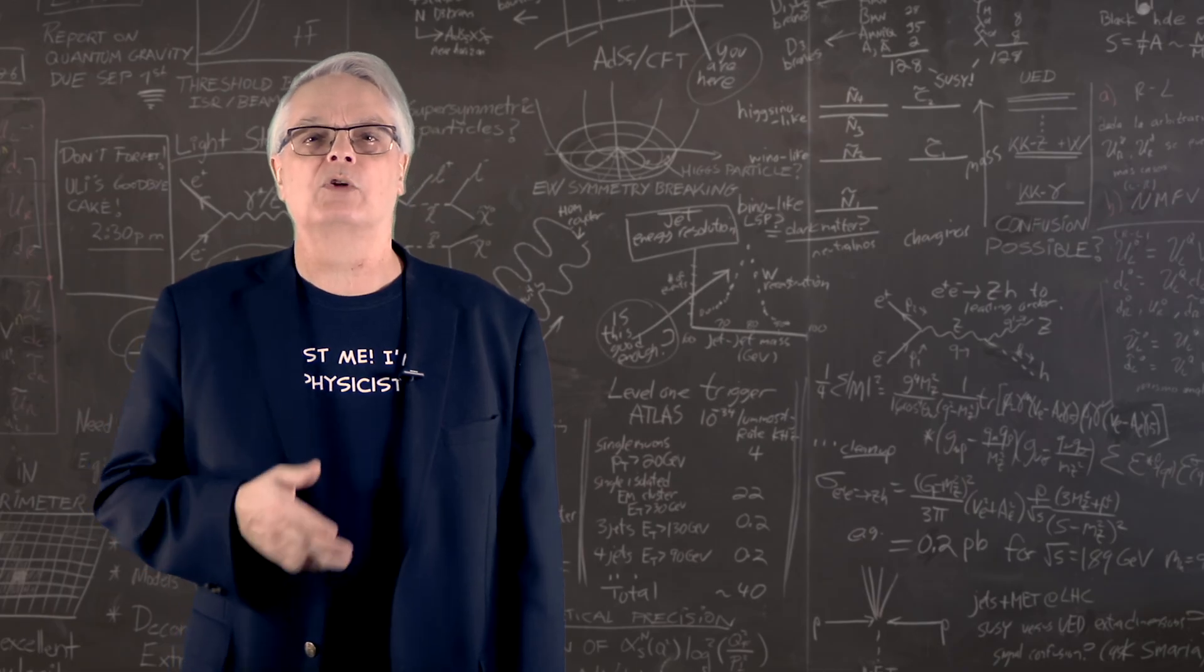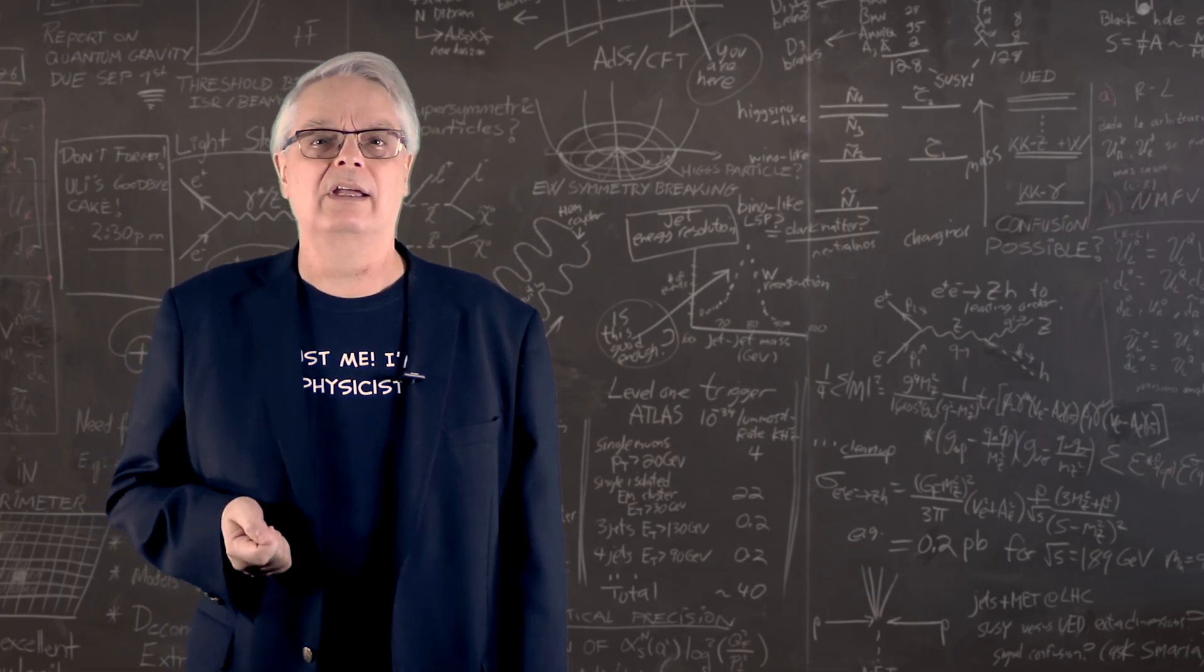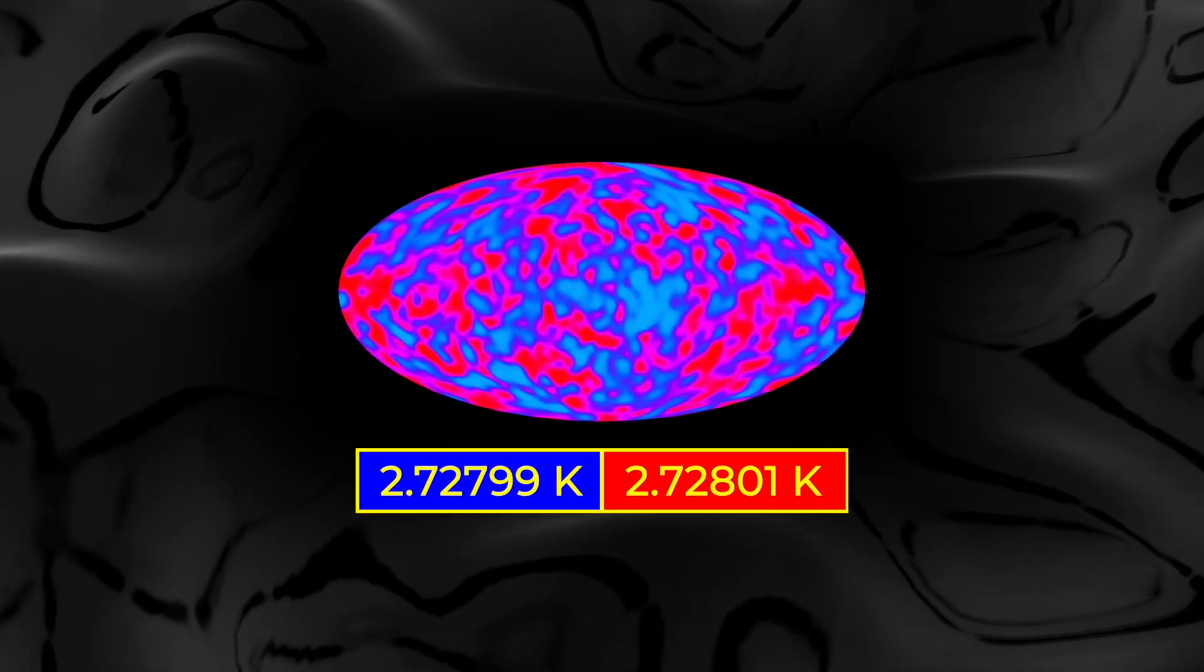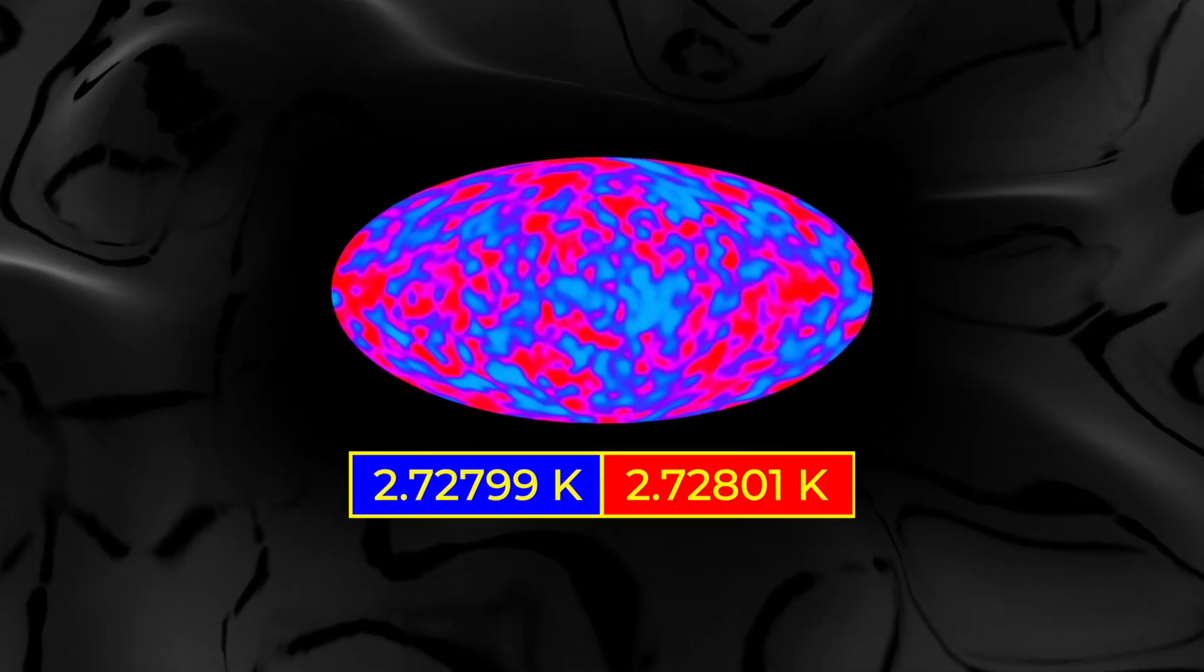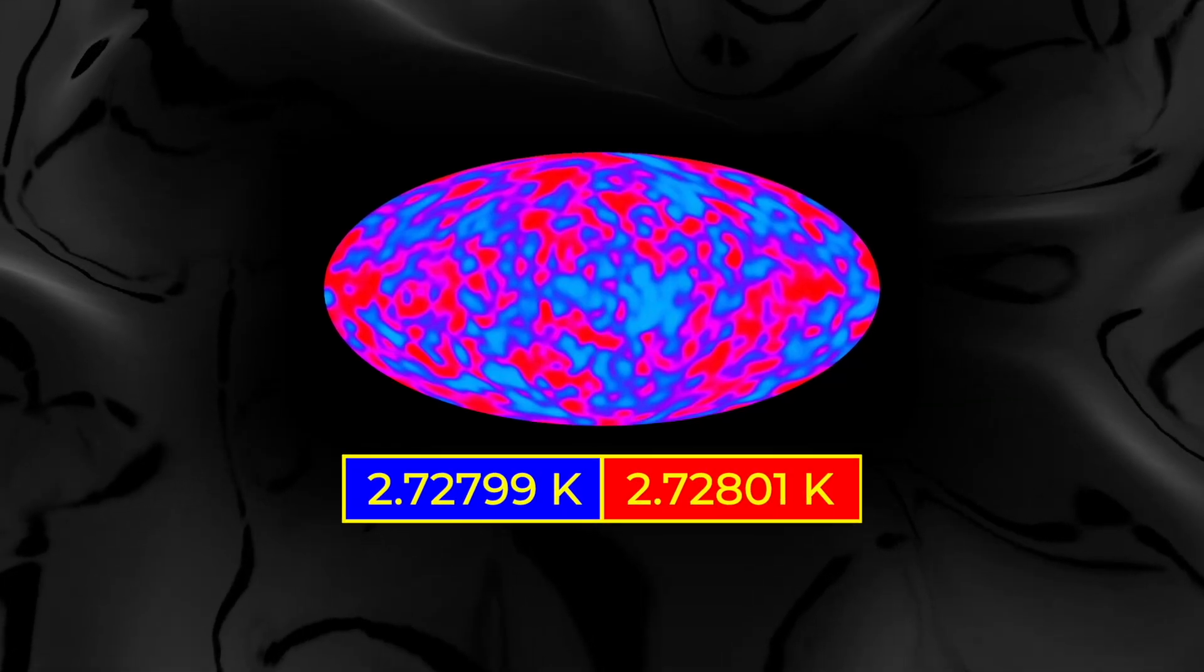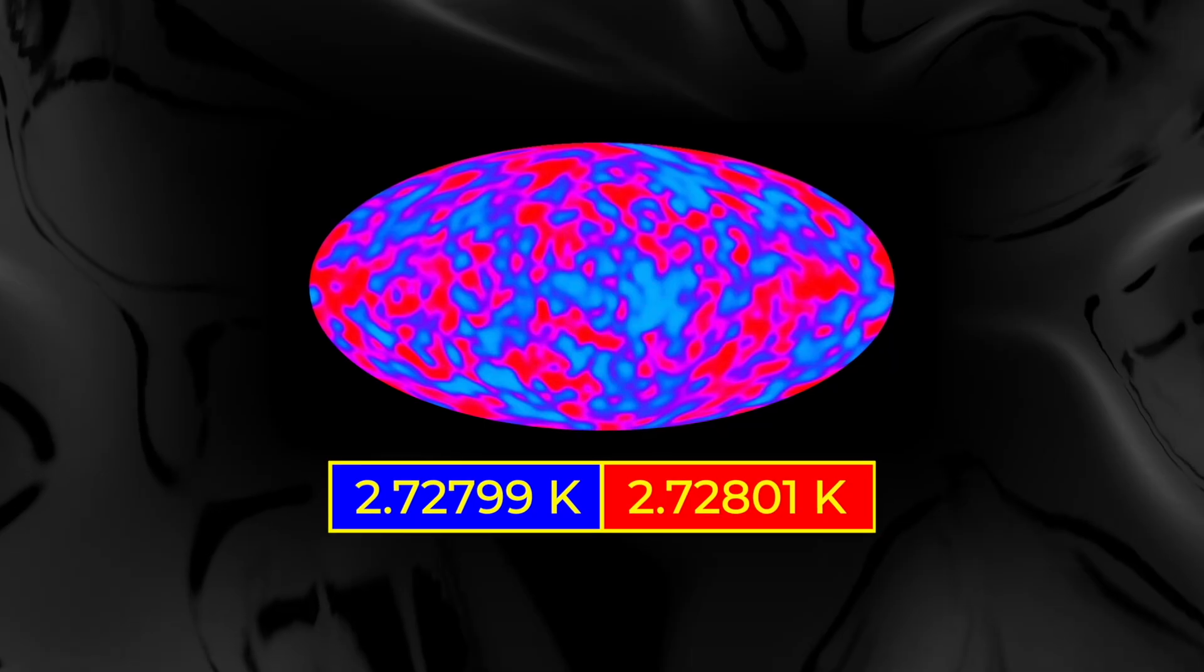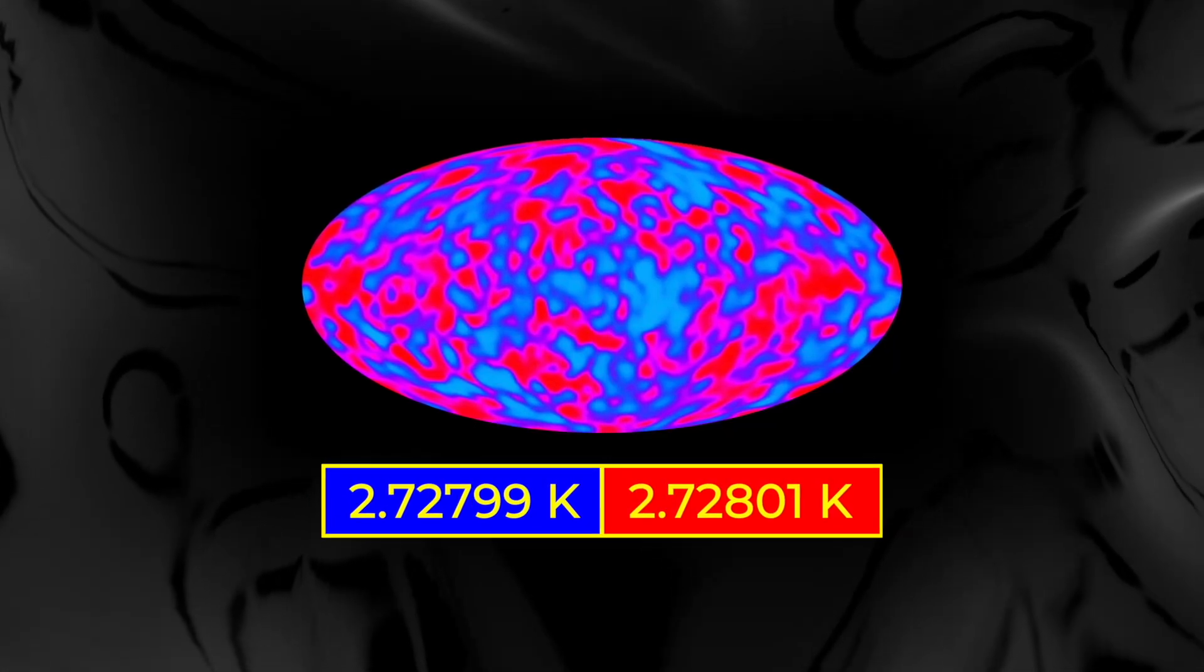When the COBE astronomers erased the contribution from the Milky Way, they were left with this red and blue splotchy picture, which is a precise measurement of the tiny non-uniformities in the CMB. The temperature difference between the red and blue spots in this picture is only about 20 microkelvin.